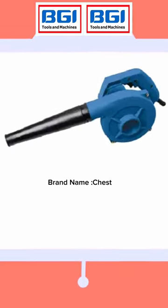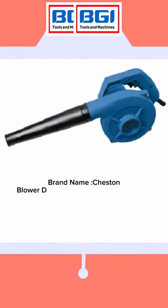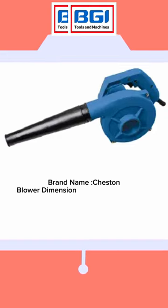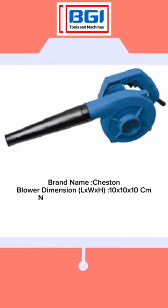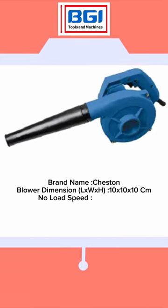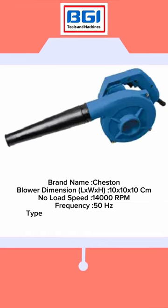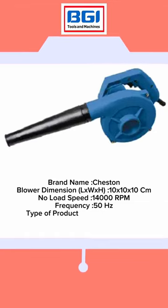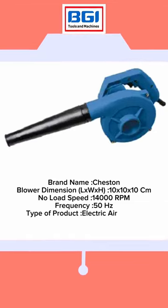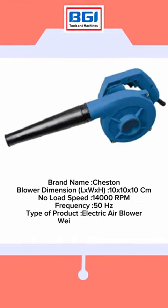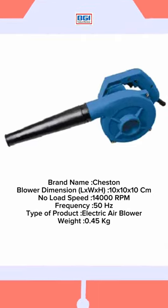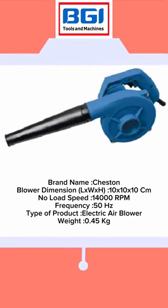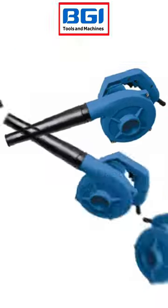Specifications of this product: Brand name — Chaston. Blower dimensions — 10x10x10cm. No-load speed — 14,000 RPM. Frequency — 50Hz. Type of product — Electric Air Blower. Weight — 0.45kg.